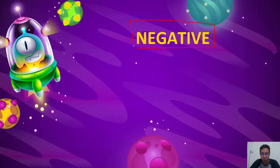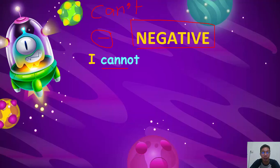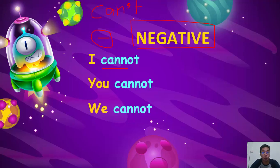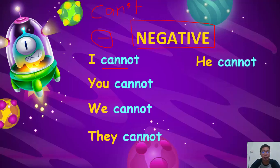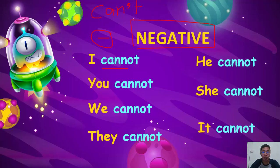Now, negative sentences. I cannot — you can also write can't: C-A-N apostrophe T. I cannot or I can't. You cannot or you can't. We cannot or we can't. They cannot or they can't. He cannot or he can't. She cannot or she can't. It cannot or it can't.